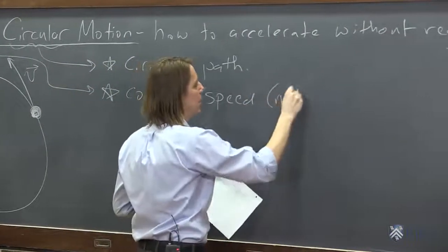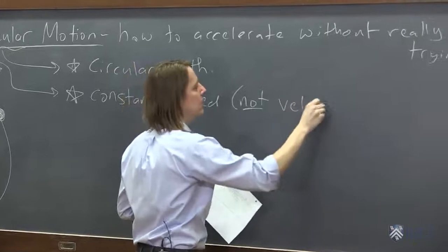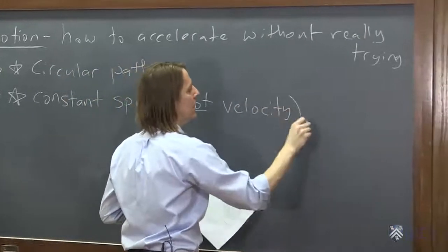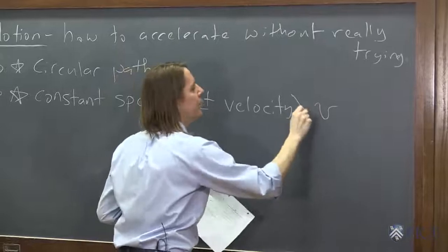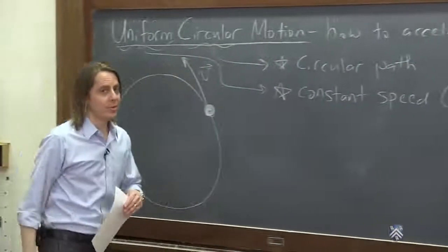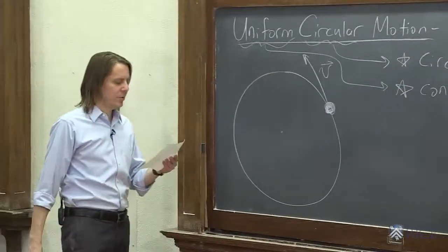Because the velocity vector is changing direction. Constant speed, not velocity. And the speed we'll just call v. And I won't put a vector symbol on it because it's not a vector. It's just the magnitude speed.